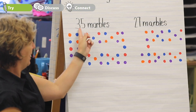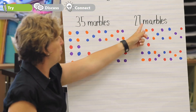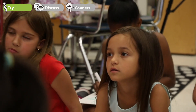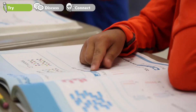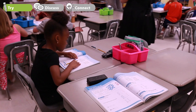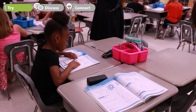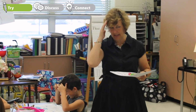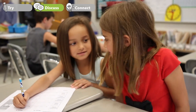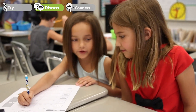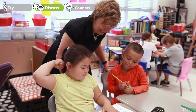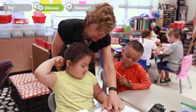First, students make sense of the problem by reading the problem aloud and unpacking the problem. Next, students work independently to solve the problem using whatever strategies and tools they choose. Then it's time to discuss with a partner how they approached the problem. The teacher observes and prompts students to support their thinking.